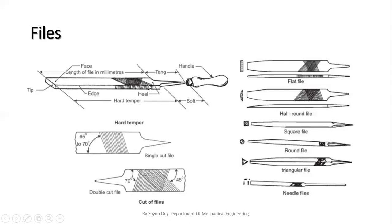Next is the triangular file. This is important because the faces are double cut and the edges are sharp. These files are used for filing angular holes — that is the main application. Next is the round file. It is tapered for one-third of its length with a double cut on larger coarser grades. It is used for filing round, elliptical, and curved openings.